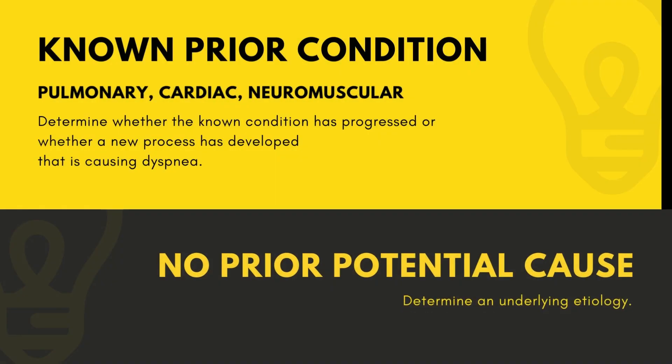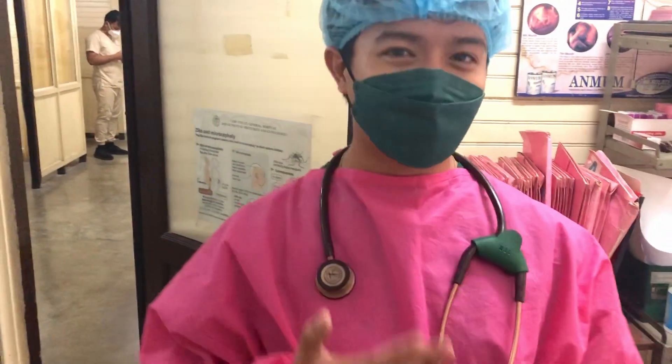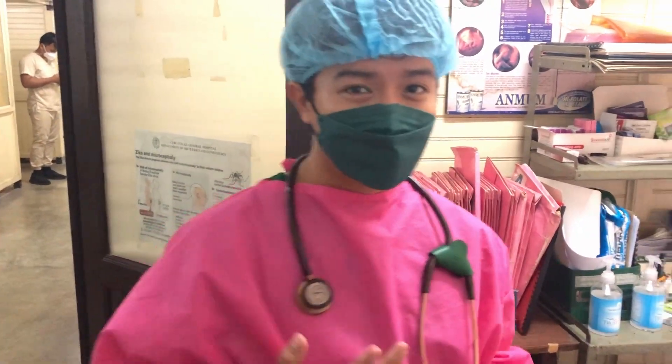For patients with a known prior pulmonary, cardiac, or neuromuscular condition and worsening dyspnea, the initial focus of the evaluation will usually address determining whether the known condition has progressed or whether a new process has developed that is causing dyspnea. For patients without prior known potential cause of dyspnea, the initial evaluation will focus on determining an underlying etiology. Determining the underlying cause if possible is extremely important as the treatment may vary dramatically based upon the predisposing condition.